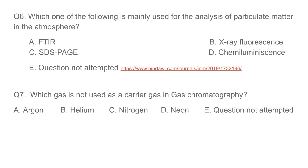Question 7: Which gas is not used as a carrier gas in gas chromatography? Options include argon and others. The answer relates to the flame ionization detector — gases used as carrier gases in gas chromatography do not include those that interfere with detection.